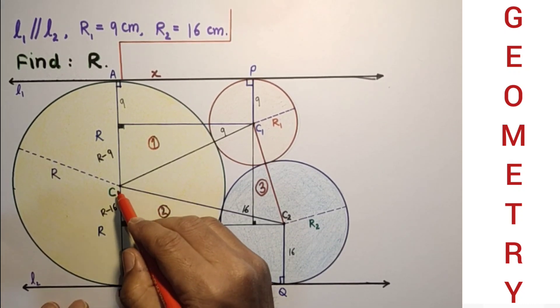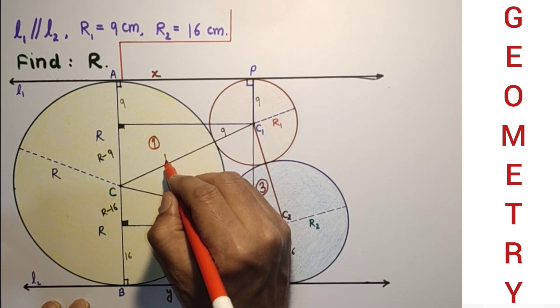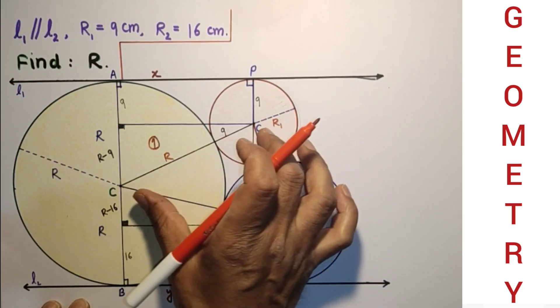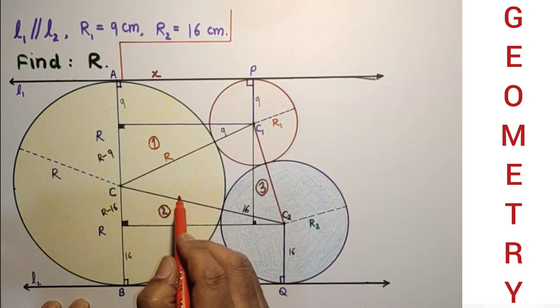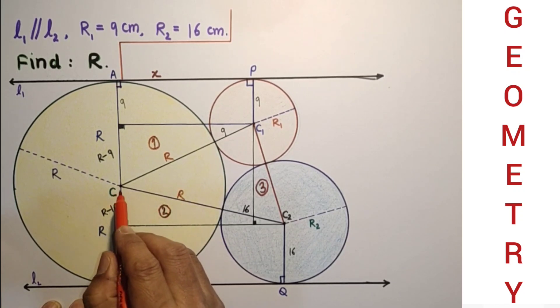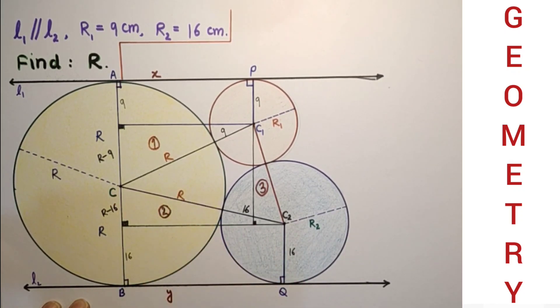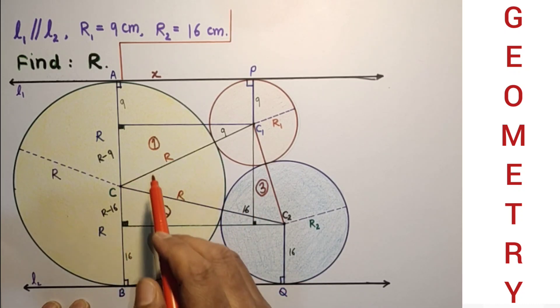This from here to here is capital R. So this C, C1 length will be R plus 9. And in the same way this C, C2 is R plus 16. We can now use Pythagorean theorem. From triangle 1.